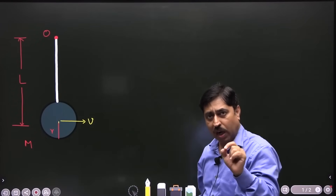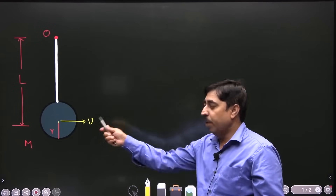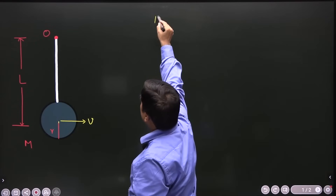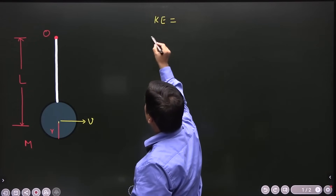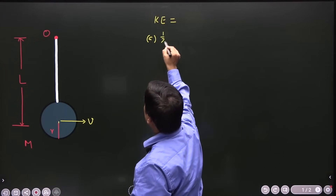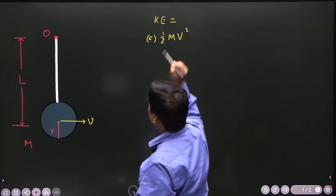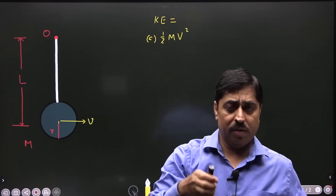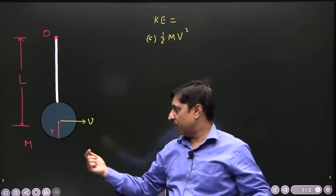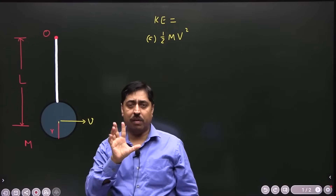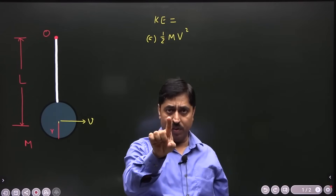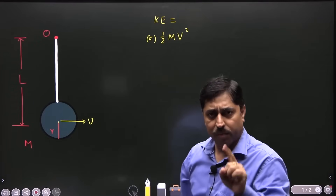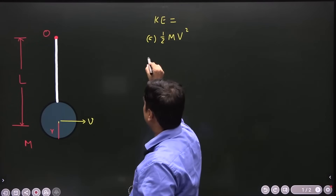Now I want to ask this question. Immediately after I push the bob, its kinetic energy will be equal to half mv². This is the first option I am giving to you. V is the speed of the center — it is just hanging, I have just pushed it, and immediately after the push the speed of the center is v. Can I say that the kinetic energy of this thing is half mv²? That is the first option.